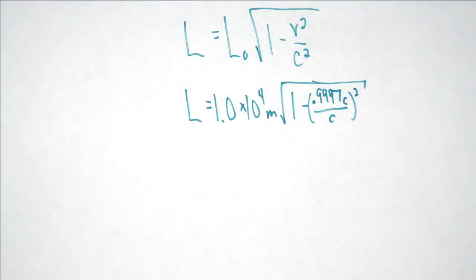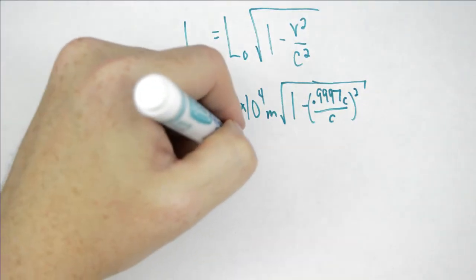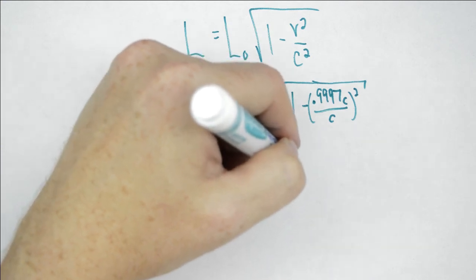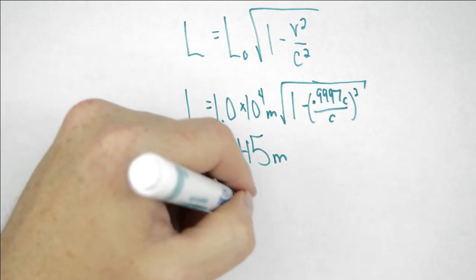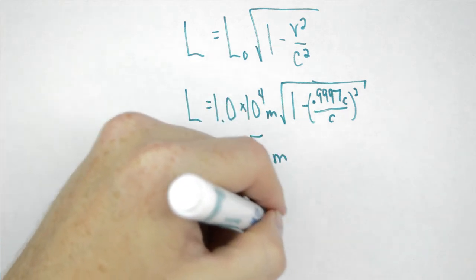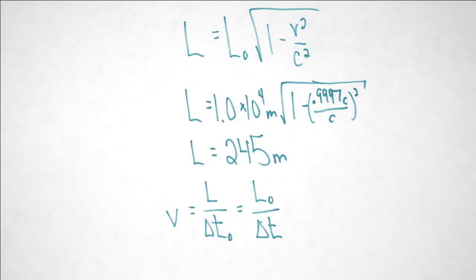We take the length of 10 kilometers and multiply it by the square root of 1 minus v squared over c squared. We see that the muon only travels 245 meters. This means that according to the muon, it is traveling 0.9997 times the speed of light, and according to the scientist. And we have consistency.